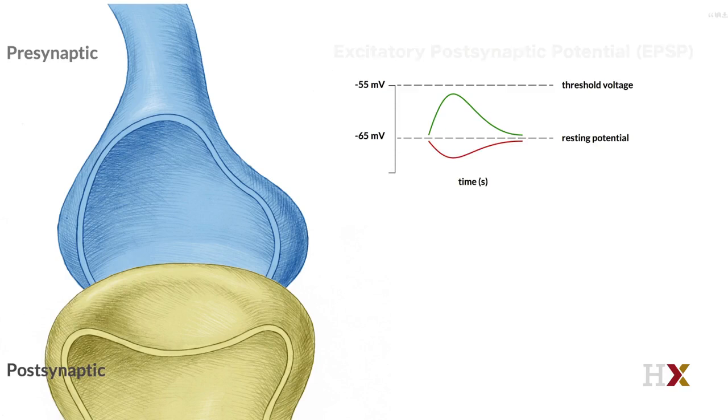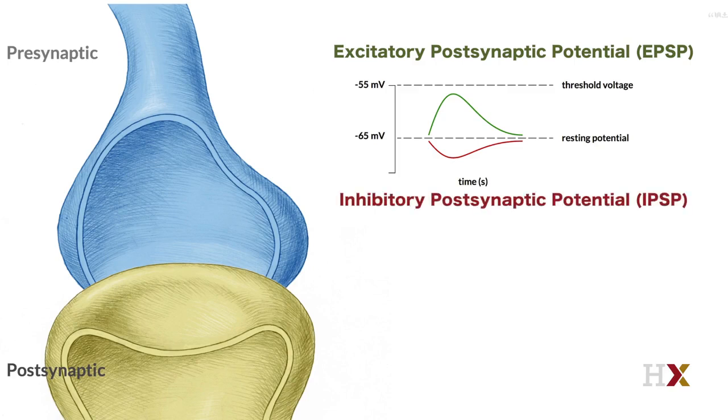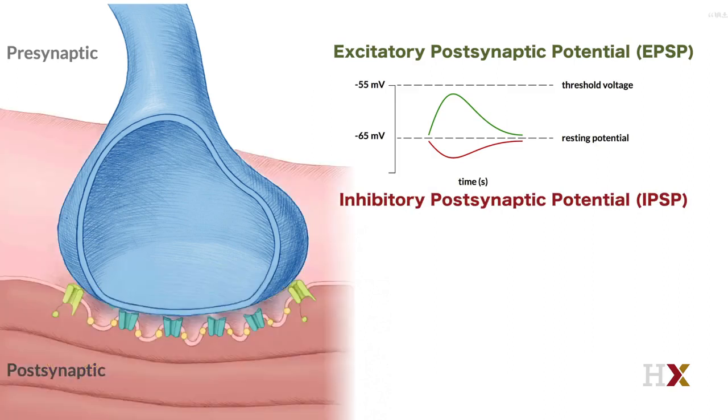Thus, we have either excitatory postsynaptic potentials, which are commonly called EPSPs, and inhibitory postsynaptic potentials, or IPSPs. At the neuromuscular junction, like Katz originally used, things are a little bit different, so we'll see some slightly different terminology used.